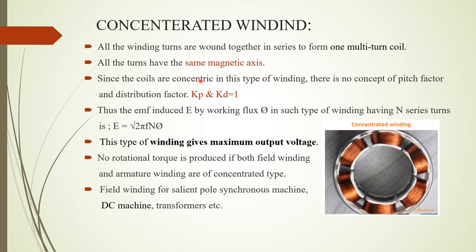In concentrated winding, all windings are bound together to form a multi-turn coil, meaning all turns share a single magnetic axis. The pitch factor Kp and distribution factor Kd are both equal to 1. The EMF induced equals root(2) × pi × f × N × phi, where f is the fundamental frequency, N is the number of turns, and phi is the working flux. Concentrated windings give maximum output voltage and are mainly used for salient pole synchronous machines, DC machines, and transformers.